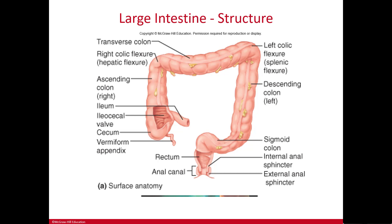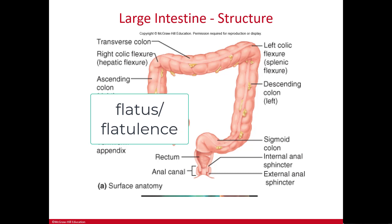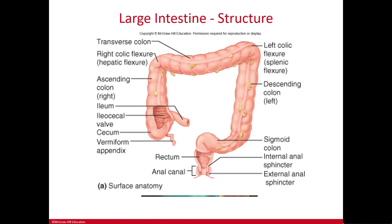The rectum has three transverse folds and valves that enable it to hold onto feces and allow us to pass gas. As medical professionals, we use the term flatus, or flatulence — not farts. Flatulence is mostly nitrogen and oxygen, about 90%, together with methane, hydrogen sulfides, carbon dioxide, and fermented bacteria from undigested food, giving it its characteristic odor. The anal canal is the last one to two inches of the large intestine, opening to the outside as the anus.